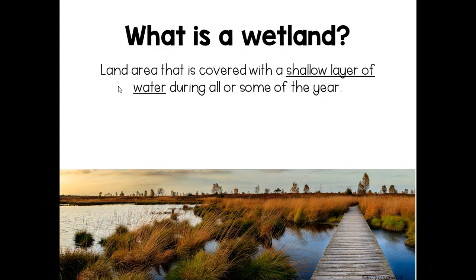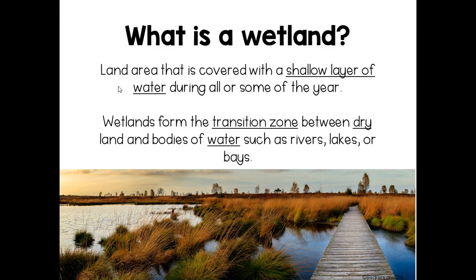A wetland is defined as an area that's covered with a shallow layer of water during all or some of the year. Wetlands actually form the transition zone between dry land and bodies of water, like rivers, lakes, or bays.